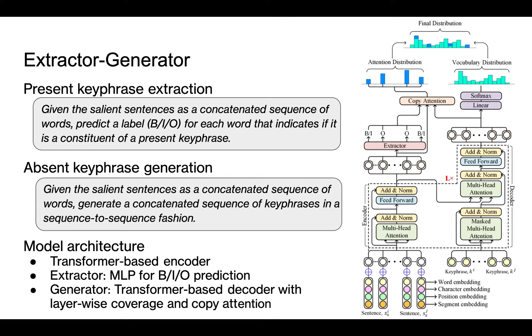The second task is absent keyphrase generation. Given the salient sentences as a concatenated sequence of words, the generator generates a concatenated sequence of keywords in a sequence-to-sequence fashion. This figure gives an overview of the model architecture. The extractor and generator share the same transformer-based encoder. It maps each input word into an embedding representation. The extractor is simply a multilayer perception to make the BIO prediction. The generator relies on a transformer-based decoder to generate the absent keyphrases.